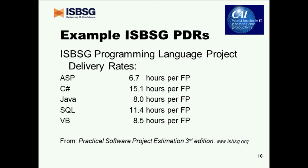We then looked at the programming language project delivery rates in the ISBSG historical data. These are the median figures — so for C#, for example, with 150 projects in the dataset, this would be the 75th project, the one in the middle, and the median is about 15 hours per function point. This table gives an idea of the variation between languages. Other things come into play — the size of your development team, the platform you're developing on — but it's a good indication, better than having no indication at all. The full tables for programming languages and other factors affecting development performance are all in the book Practical Software Project Estimation, published by McGraw-Hill.